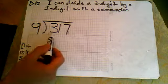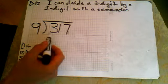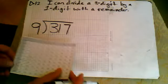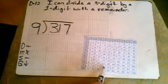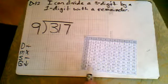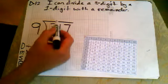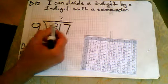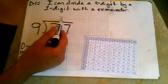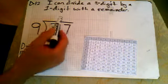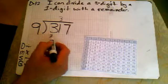Alright, so first thing, does 9 go into 3? It does not, but it will go into 31. Let's take a look. 9 goes into 36—too big, so let's back it up to 27. 9 goes into 27 three times, so I'm going to put that 3 right above that 1, since 9 went into the 31. So 3 times 9 is 27.